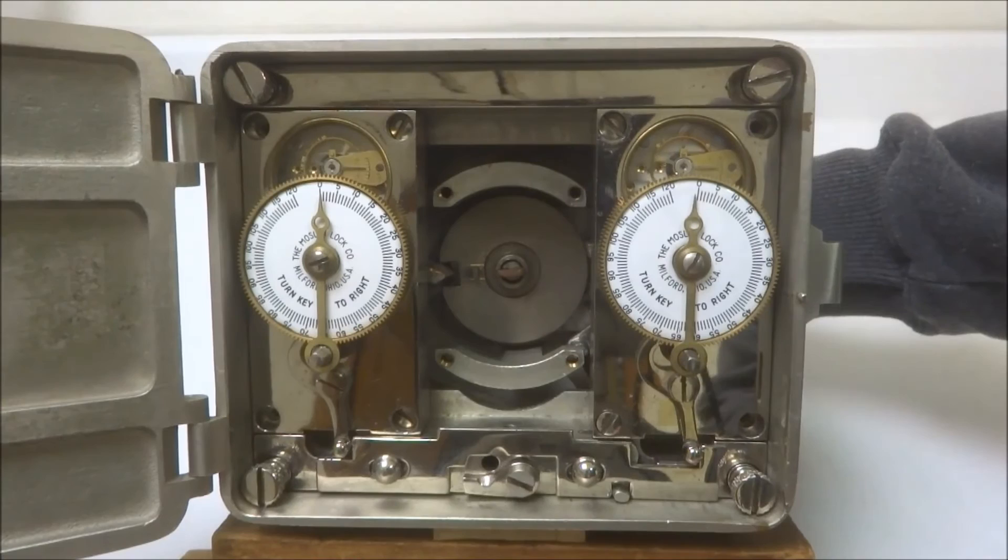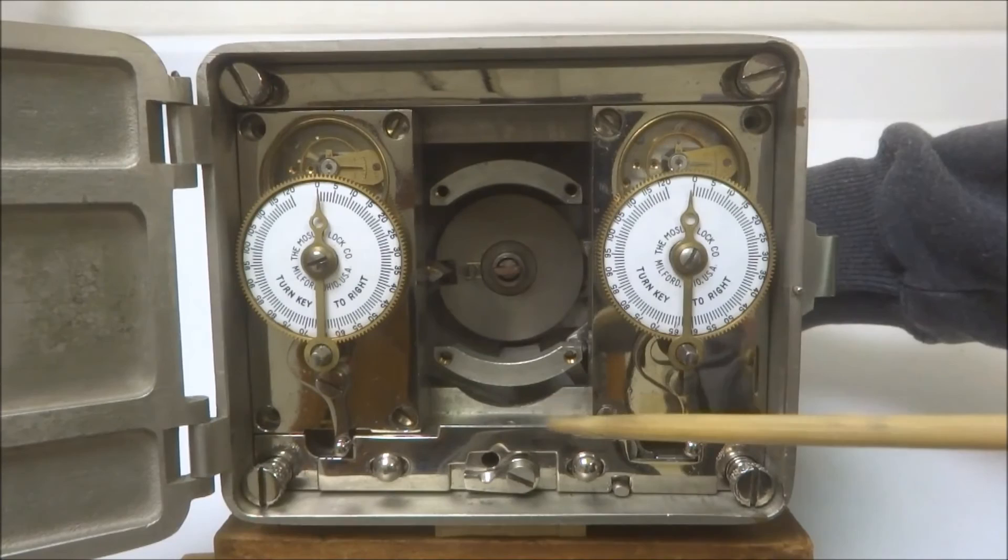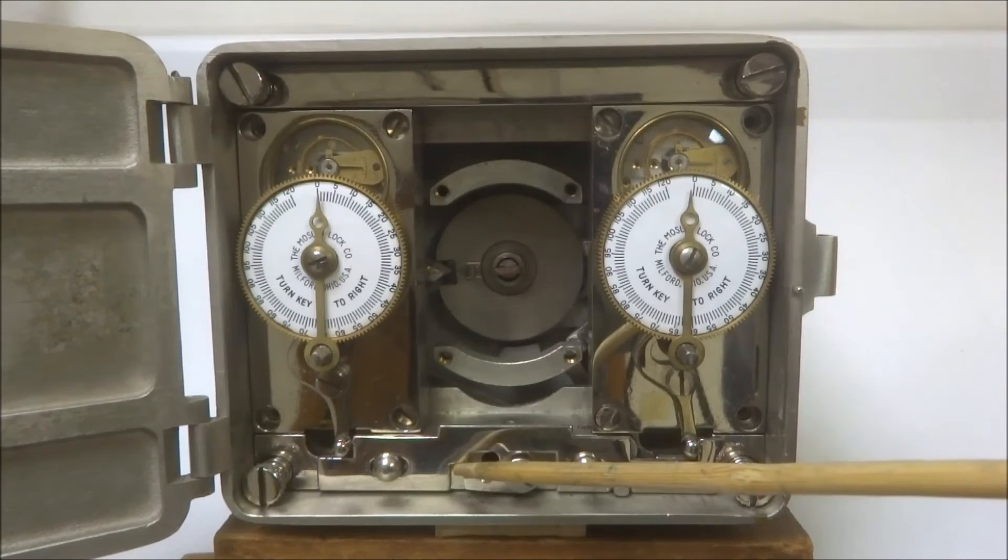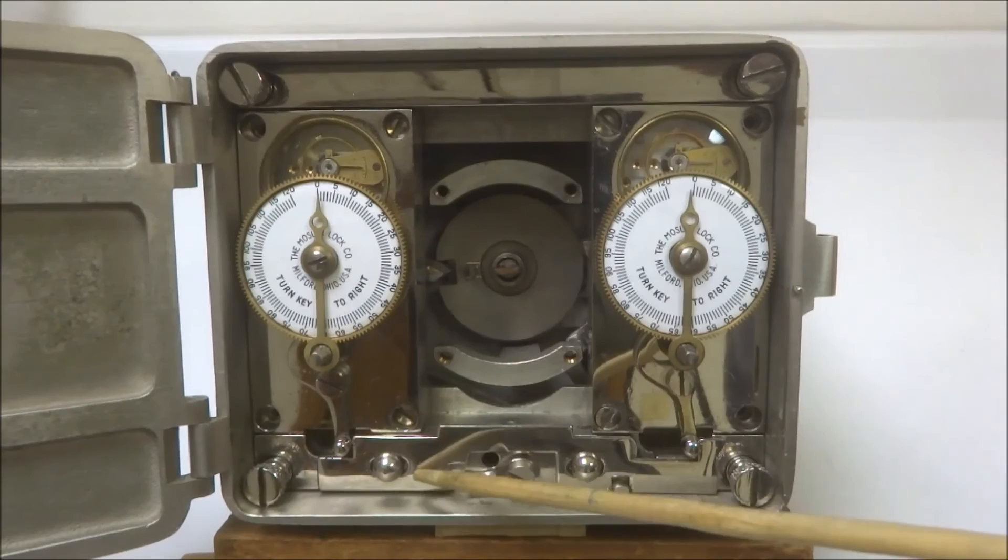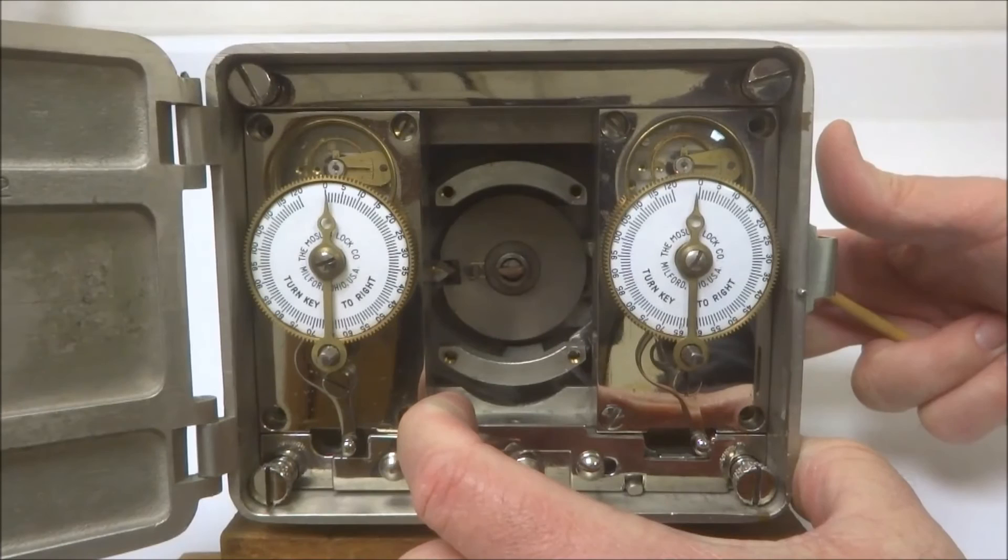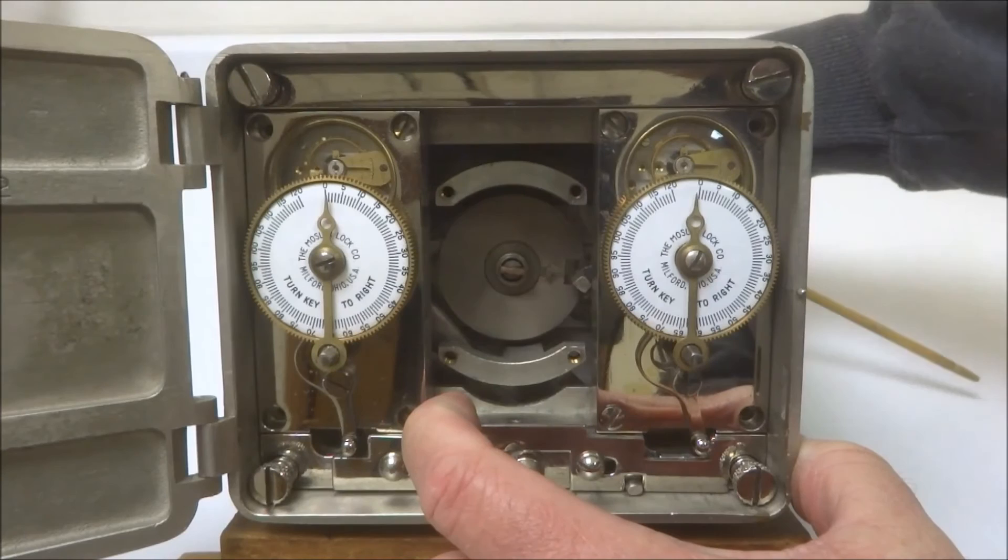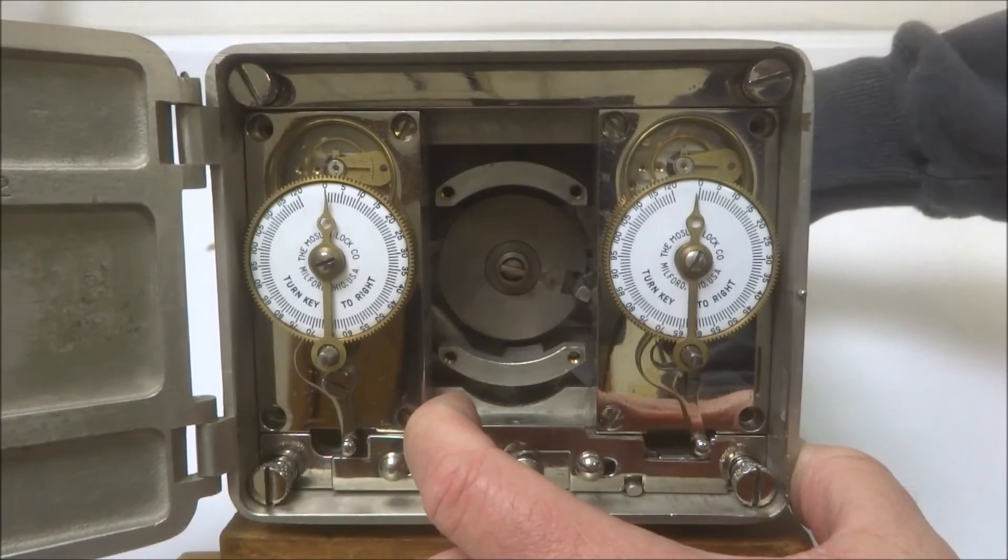And now the time locks are operating because the pressure has been released from the snubber bar. This is no longer holding the snubber bar in place. And now the time locks have reactivated and they will continue to count down for the next, it takes about another 30 minutes. And they will then move this snubber bar all the way over, like so. And then the regular combination could be dialed in and you see this is now move inward, thus opening the safe.